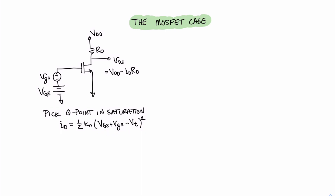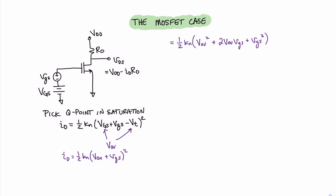In order to do that, we need to expand the square and look at the condition necessary for a mathematically linear equation. Our first observation is that capital V subscript capital GS, our DC offset value, minus VT is our overvoltage value. Therefore, we can rewrite this as ID equals one half KN times (VOV plus little VGS) squared. Expanding this square, we get VOV squared, plus 2·VOV·VGS, plus VGS squared. Distributing the one half KN, we find three distinct terms: one half KN·VOV squared, plus KN·VOV·little VGS, plus one half KN·little VGS squared. The one half KN·VOV squared term is all DC — this is our DC current, capital I sub D.